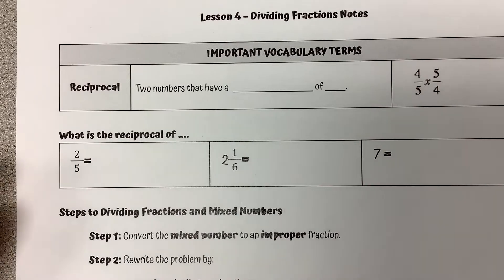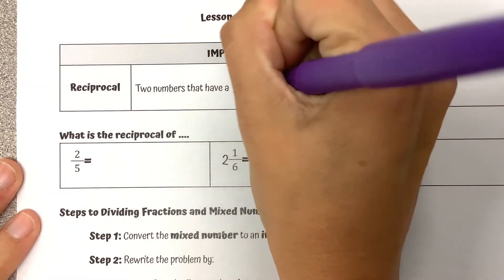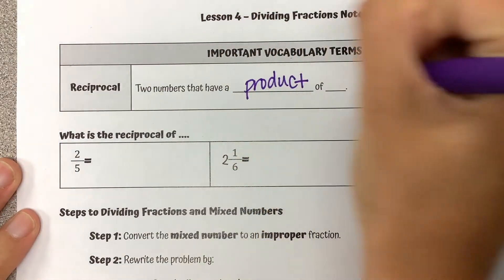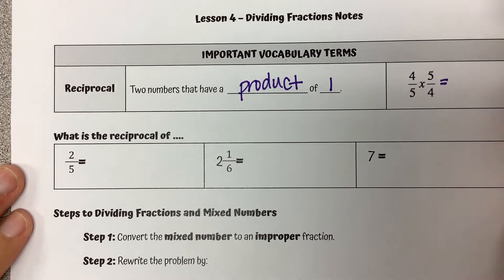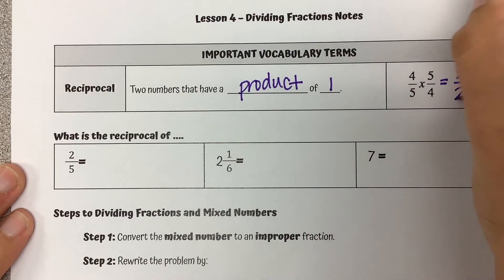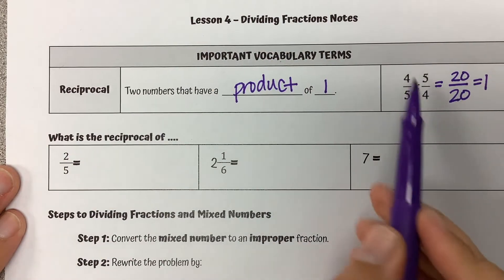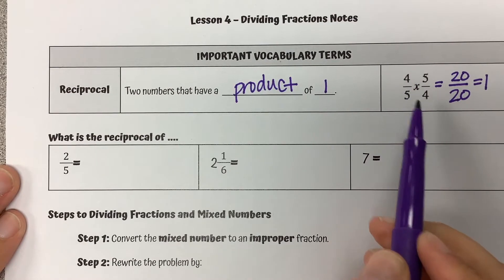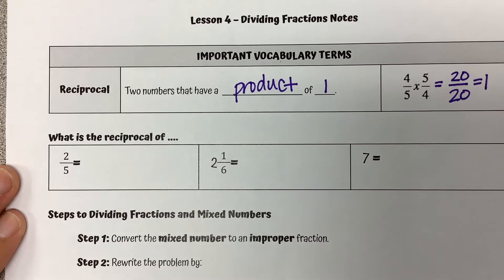A reciprocal is when you have two numbers that have a product of one. So that means when we multiply them together, we get a product of one. Like here, 4 times 5 is 20, 5 times 4 is 20, and 20 divided by 20 gives us 1. What you'll notice about these reciprocals is that they're kind of opposites — 4 over 5, if you flip it around, becomes 5 over 4.